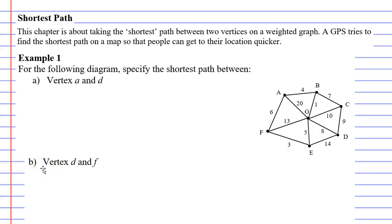This video is all about finding the shortest path between two vertices on a weighted graph. Now this is really useful for things such as a GPS. A GPS needs to find the shortest path on a map so people can get to their location quicker. Let's just get straight into example 1.